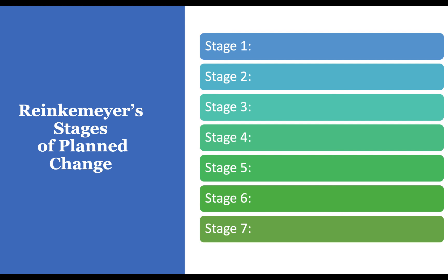The textbook refers to Rinkmeyer's stages of planned change. Stage one: identification and development of a felt need and desire for change. Stage two: development of a change relationship between the community health nurse and the community. Stage three: clarification or diagnosis of the community's problem, need, or objective. Stage four: examination of alternative routes and tentative goals and intentions for action. Stage five: transformation of intentions into actual change — the intervention you're proposing. Stage six: stabilization and evaluation. Stage seven: termination of the relationship between the community health nurse and the community.